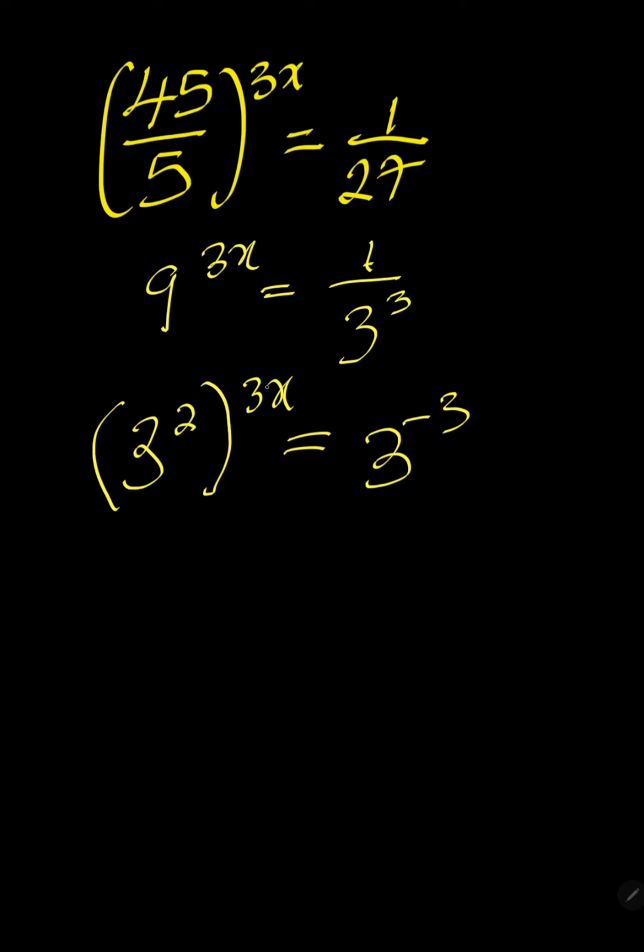Then we use these two to multiply the 3x here. We have 3 to the power of 6x is equal to 3 to the power of minus 3.